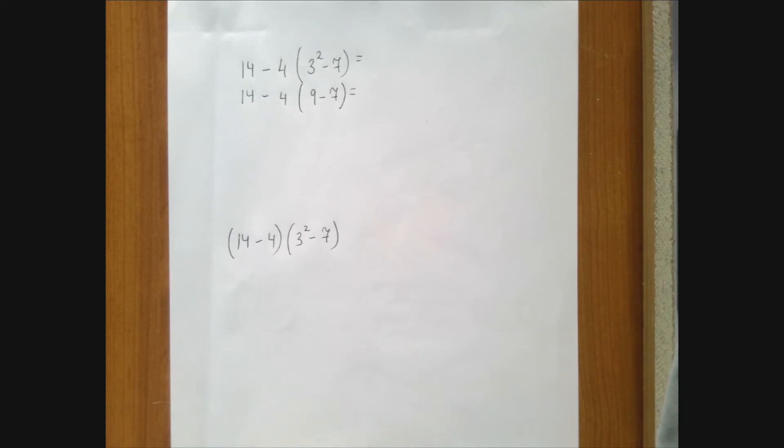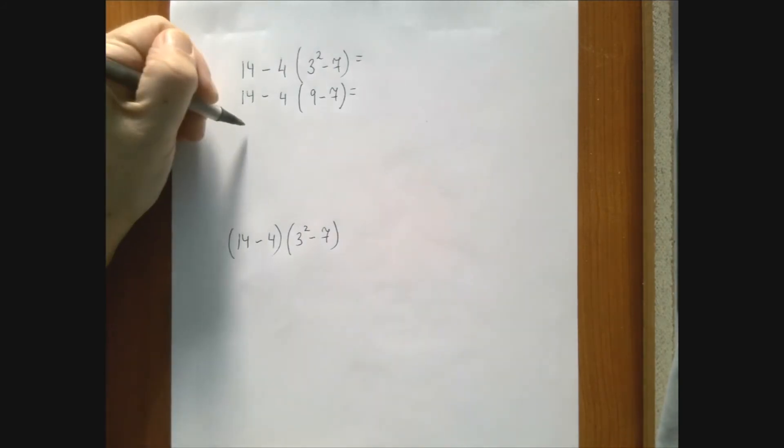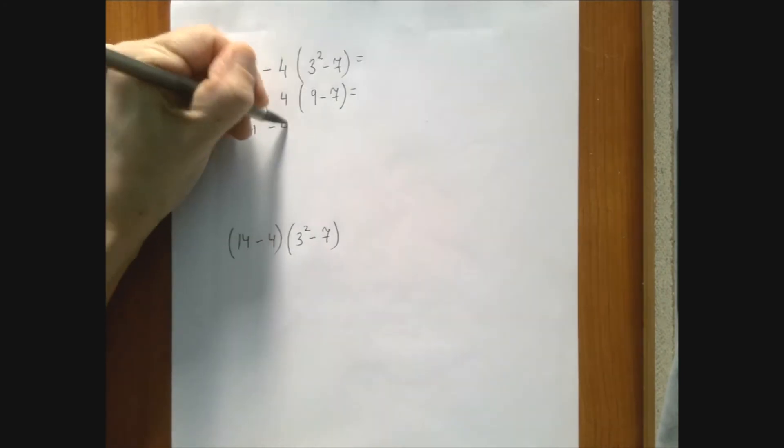Now, we still have the parenthesis, so we perform the subtraction in there. So we get 14 minus 4 times 9 minus 7, that's 2.